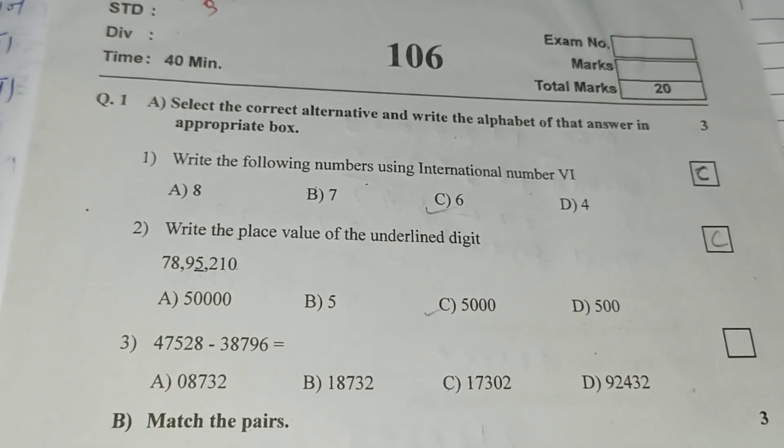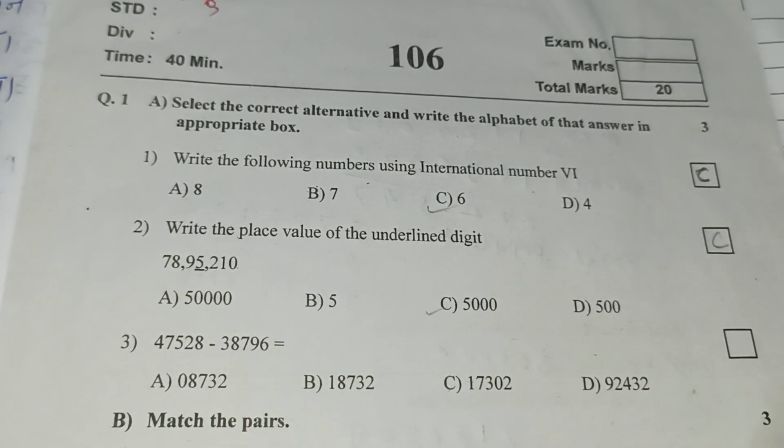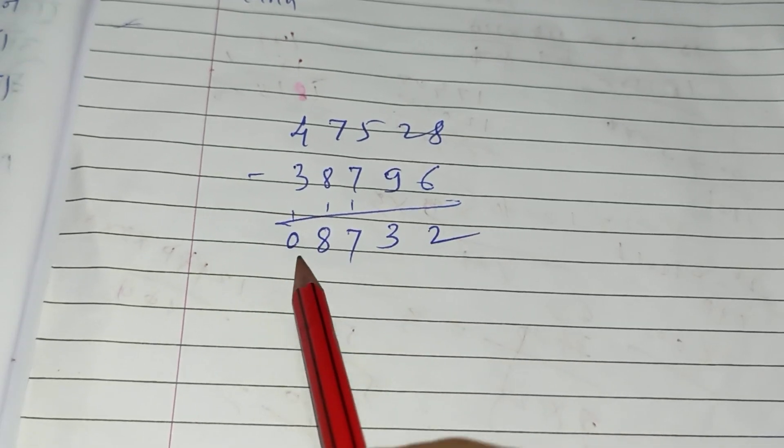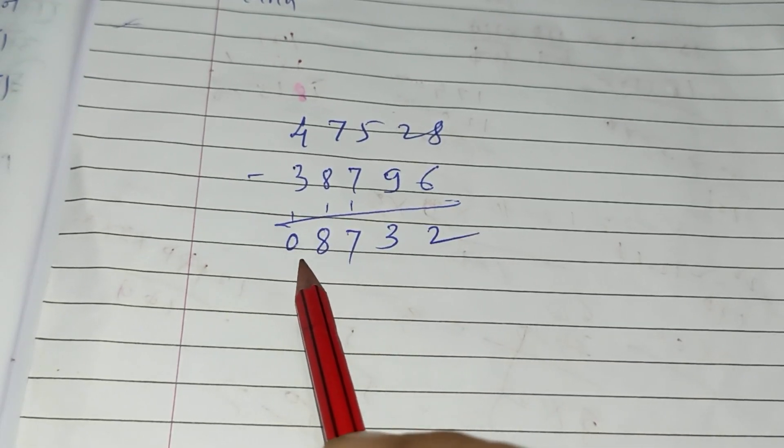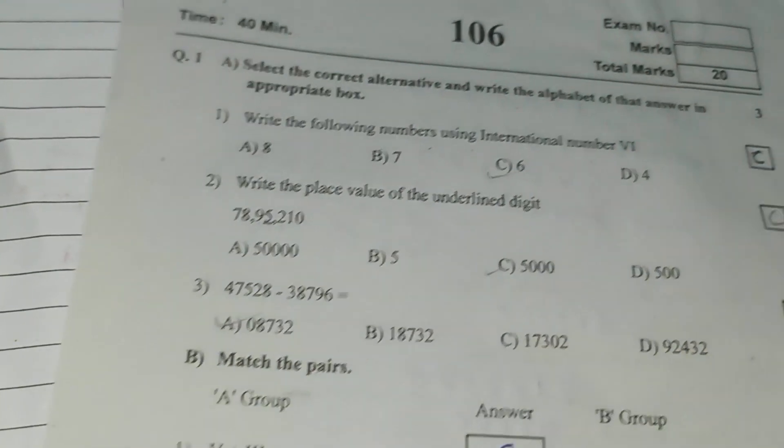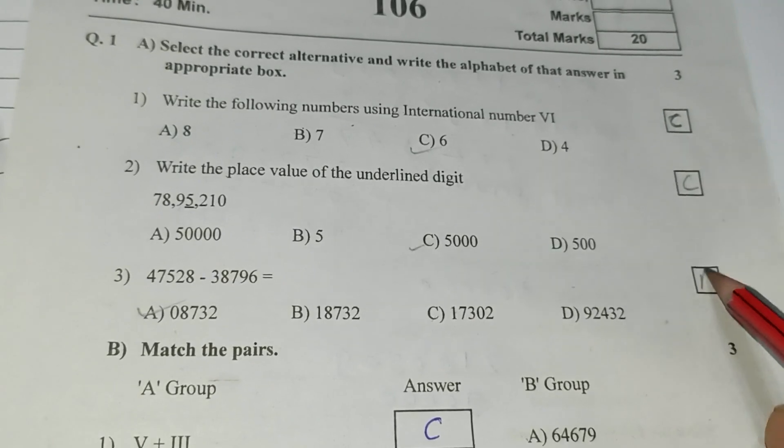47,528 minus 38,796. Subtraction is here. 0, 8, 7, 3, 2. First A answer here write A.